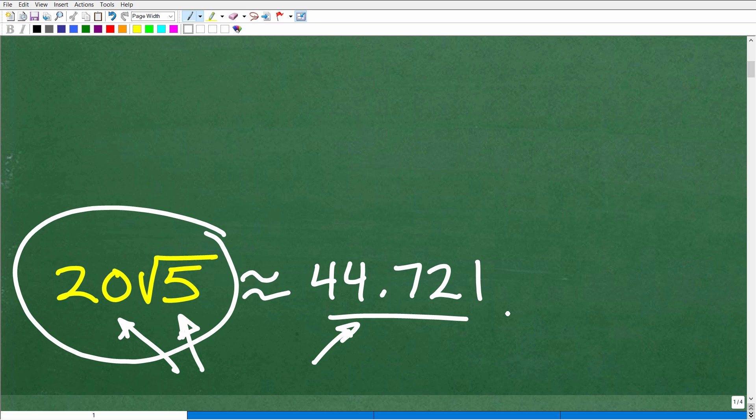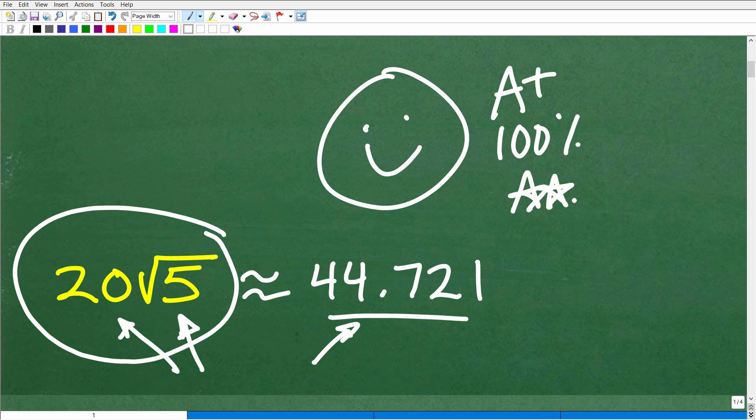And this is a pretty standard problem. So hopefully, you got this right. And if that is the case, let's go ahead and give you a nice little happy face, an A+, a 100%, and multiple stars so you can share with your friends and family that, indeed, you are an expert when it comes to simplifying square roots and radicals.